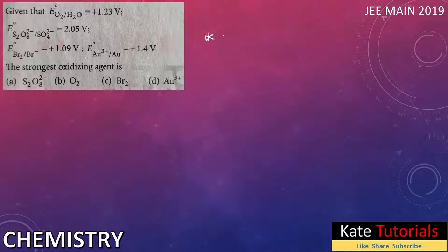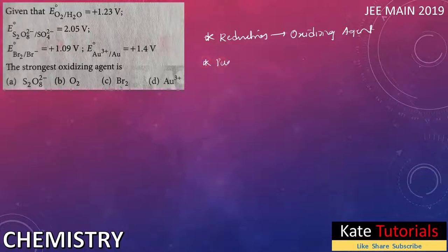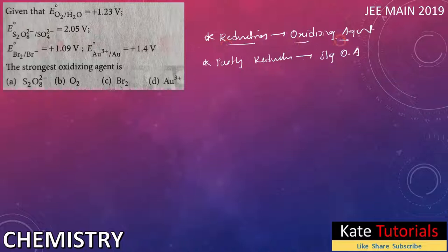We know that if any element undergoes reduction, it acts as an oxidizing agent. If it undergoes reduction very fast, it acts as a strong oxidizing agent. The faster it undergoes reduction, the more tendency it has to reduce itself, and thus it acts as a strong oxidizing agent.